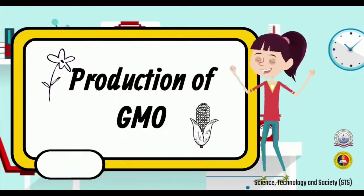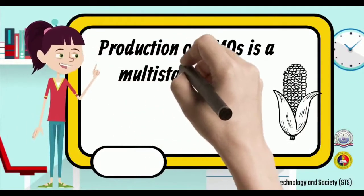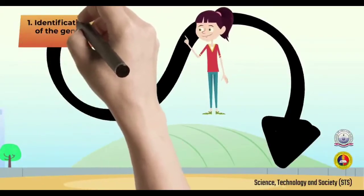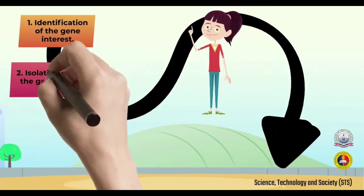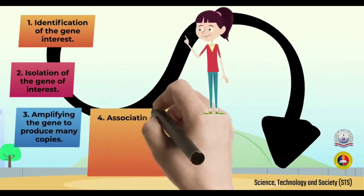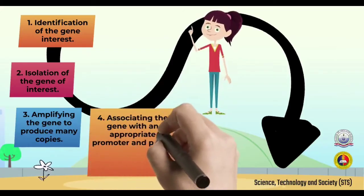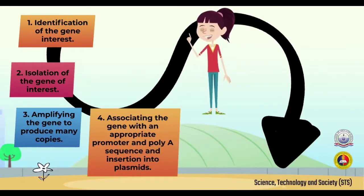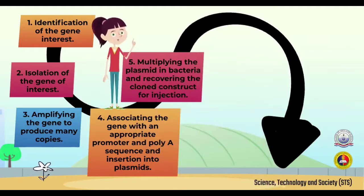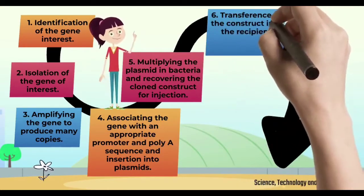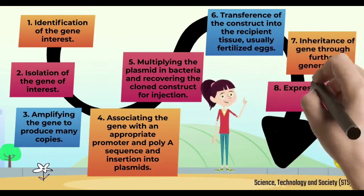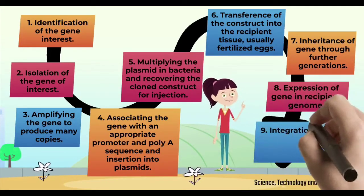The production of GMOs is a multi-stage process: first, identification of the gene of interest; second, isolation of the gene of interest; third, amplifying the gene to produce many copies; fourth, associating the gene with an appropriate promoter and polyase sequence and insertion into plasmids; fifth, multiplying the plasmid in bacteria and recovering the clone construct for injection; sixth, transference of the construct into the recipient tissue, usually fertilized eggs; seventh, inheritance of the gene through further generations; eighth, expression of the gene in the recipient genome; and lastly, integration of the gene into the recipient genome.